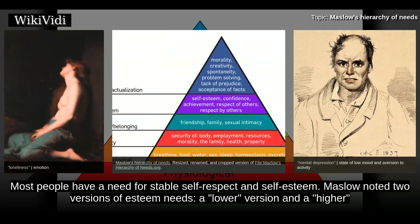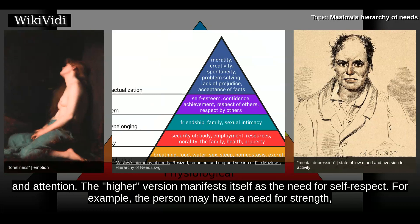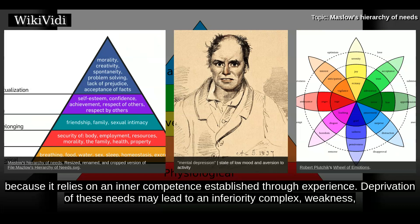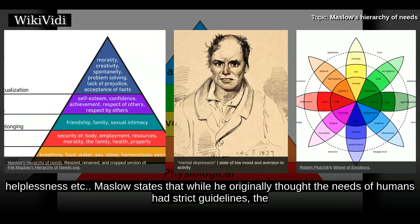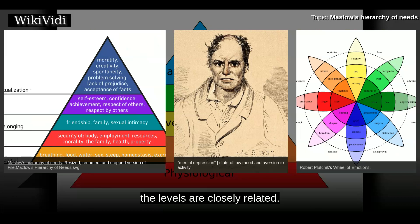Most people have a need for stable self-respect and self-esteem. Maslow noted two versions of esteem needs: a lower version and a higher version. The lower version is the need for respect from others, including status, recognition, fame, prestige, and attention. The higher version manifests as the need for self-respect — for example, a need for strength, competence, mastery, self-confidence, independence, and freedom. This higher version takes precedence because it relies on an inner competence established through experience. Deprivation of these needs may lead to an inferiority complex, weakness, and helplessness. Maslow states that while he originally thought the needs of humans had strict guidelines, the hierarchies are interrelated rather than sharply separated.